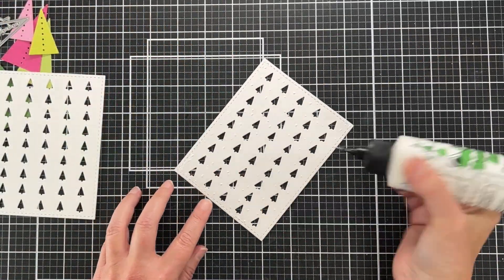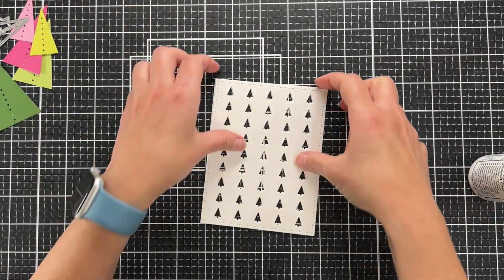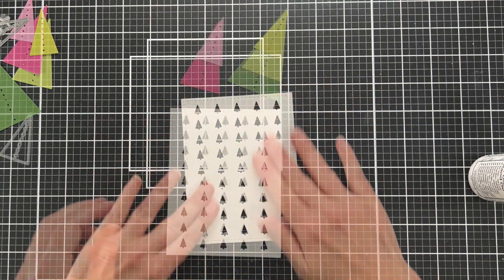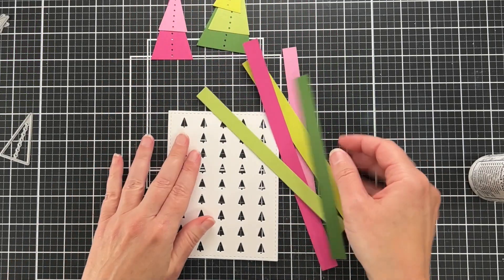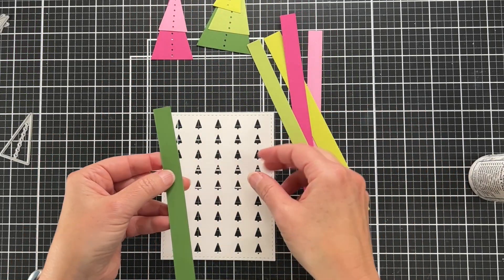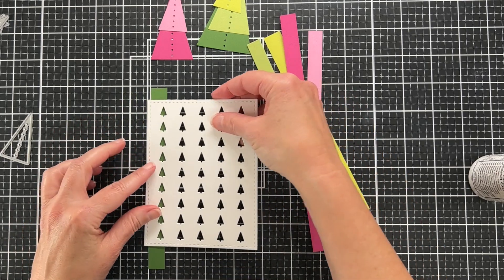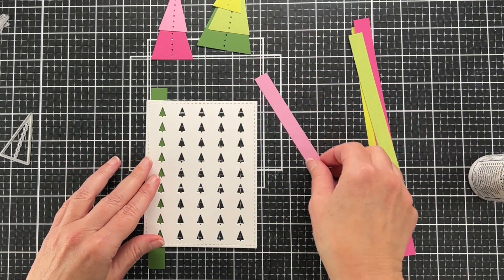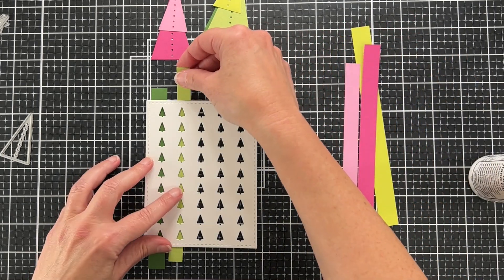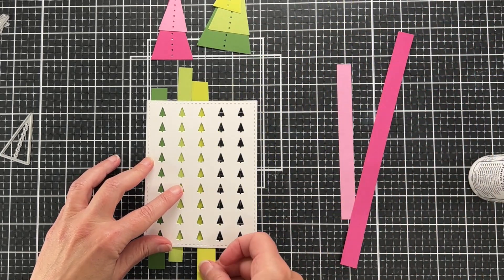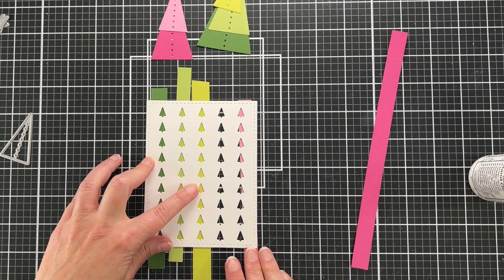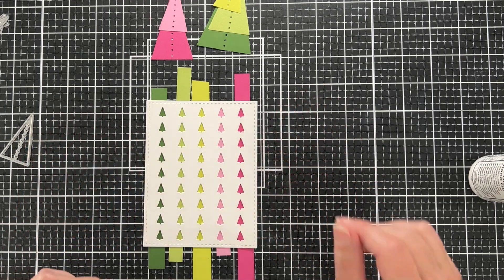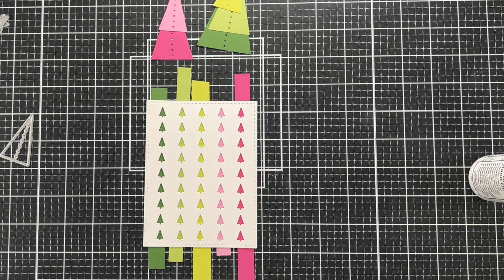I'm just going to glue these two together. I like having two because when the colors show through below, it just adds a little bit of dimension. Speaking of colors, I have cut strips of paper the same colors I used for the trees. There's five columns on the card panel and five colors that I used for my trees, so I'm just going to add those strips behind my panel.